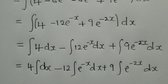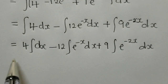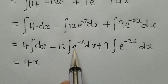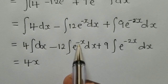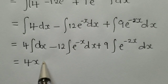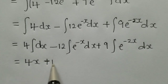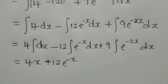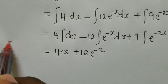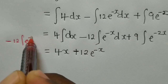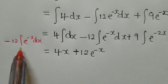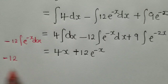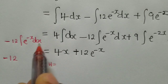Hopefully you are following these steps. Now the integral of 4 is 4x. For the integral of negative 12e^(-x) dx, let me show you the basics. We have negative 12 times e^(-x) dx. To integrate this, we maintain negative 12, and then we let u equal negative x.